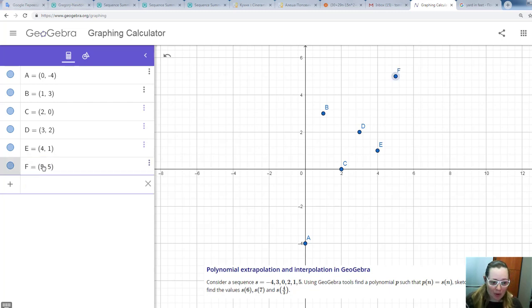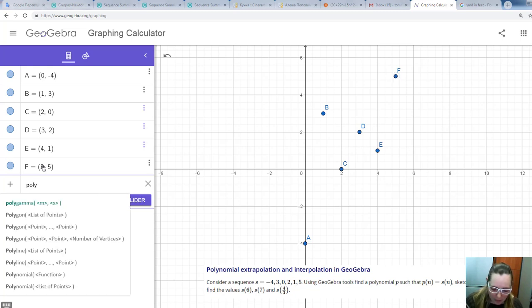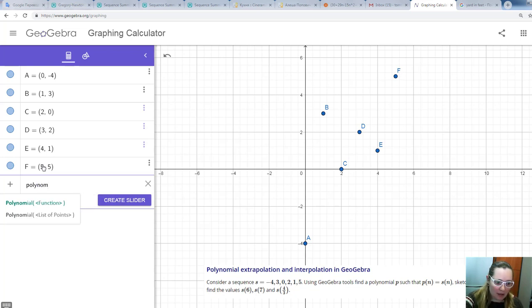And the next step, we will use the tool polynomial. We will start typing polynomial. And we're suggested two options, polynomial using function and polynomial with list of points.